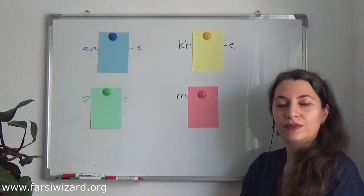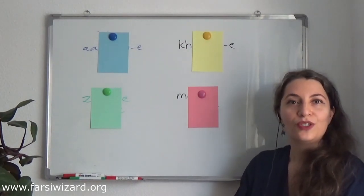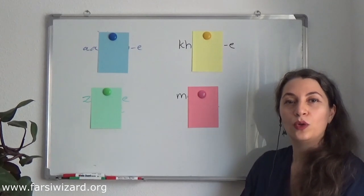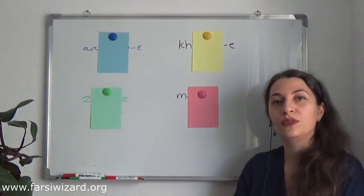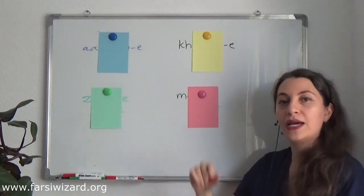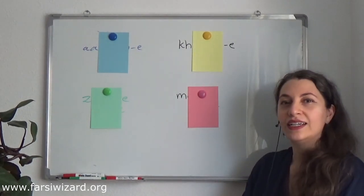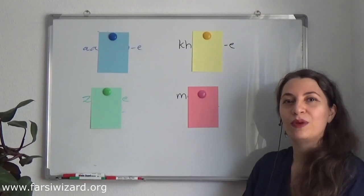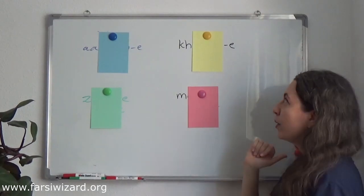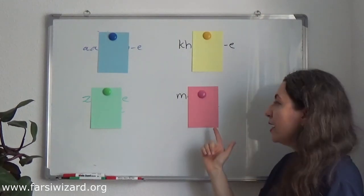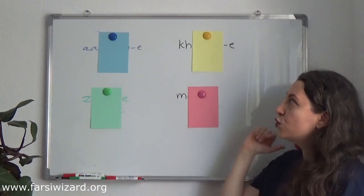Right, it was khorshid, khorshid. What about this one, the last one? Was the moon starting with 'ma'. It was one syllable. Do you remember? Right, it was māh, māh. Okay, so here we have khorshid, here we have māh.